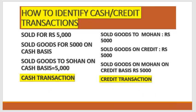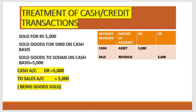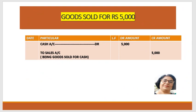जब cash sale होती है तो उसको हम किस तरह से record करते हैं। 'Sold goods for ₹5,000', 'sold goods for ₹5,000 on cash basis', 'sold goods to Sohan on cash basis ₹5,000' — यहाँ पे दो चीज़ें हैं: एक cash है, एक sale है। Sale हमारा revenue है, उसको हमने credit करना है। Cash, क्योंकि जब हम चीज़ें बेचते हैं तो हमारे पास cash आता है, cash हमारा asset है जो increase हो गया, तो उसको debit column के अंदर डाल देना है। Journal entry: Cash account debit to Sales account — cash के सामने debit column में 5,000, sale के सामने credit column में 5,000। Narration: 'Being goods sold for cash.'